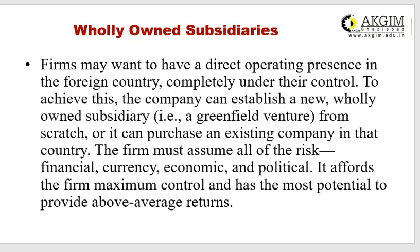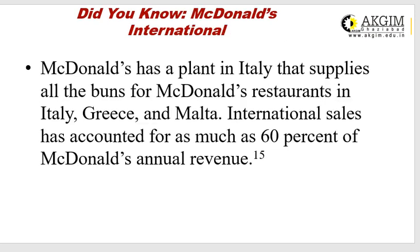Firms may want a direct operating presence in a foreign country completely under their control. To achieve this, a company can establish a new wholly owned subsidiary — a greenfield venture from scratch — or purchase an existing company in that country. The firm must assume all risks: financial, currency, economic, and political. However, it affords maximum control and has the most potential to provide above-average returns. For example, McDonald's has a plant in Italy that supplies all the buns for its restaurants in Italy, Greece, and Malta, with international sales accounting for as much as 60% of McDonald's annual revenue.